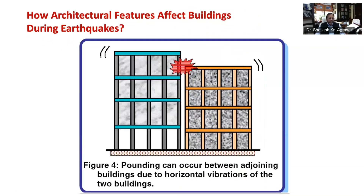Figure 4 talks about the adjacency or closeness of buildings. When two buildings are too close to each other, they may pound on each other during strong shaking, and this collision can be a great problem. When building heights do not match, the roof of the shorter building may impact the mid-height of a column of the taller building, which can be a dangerous situation.